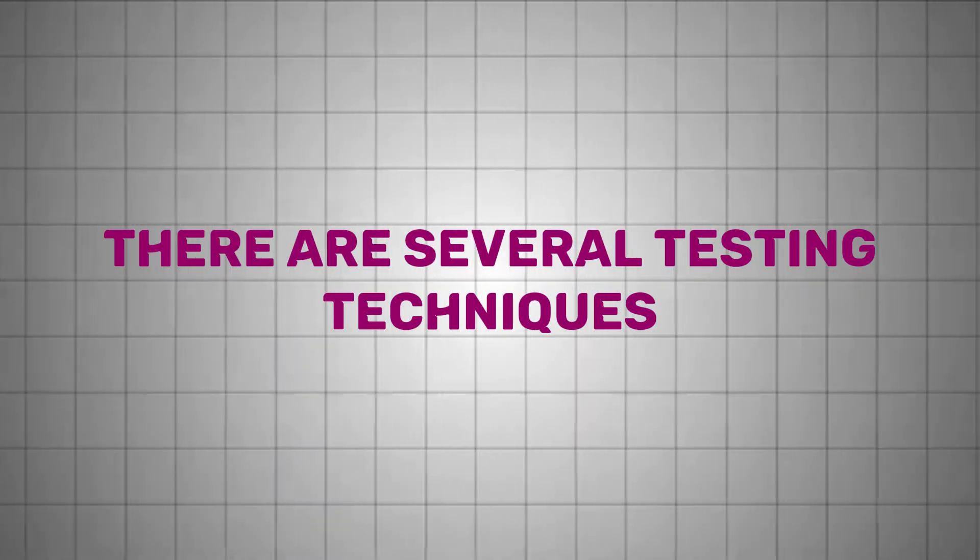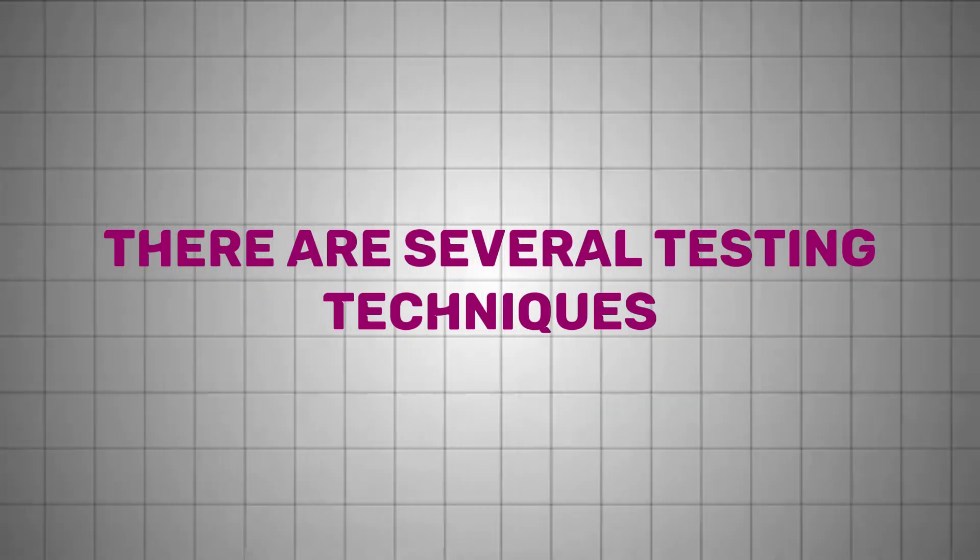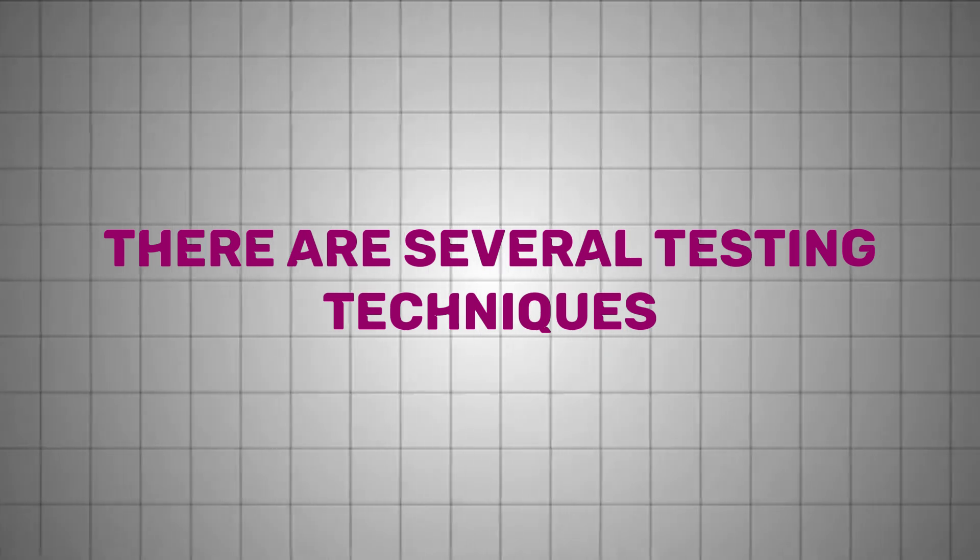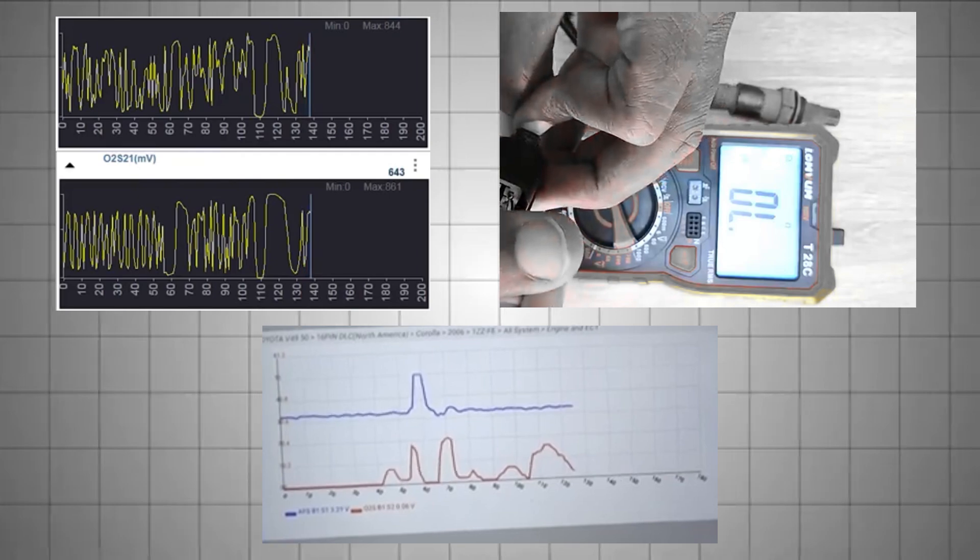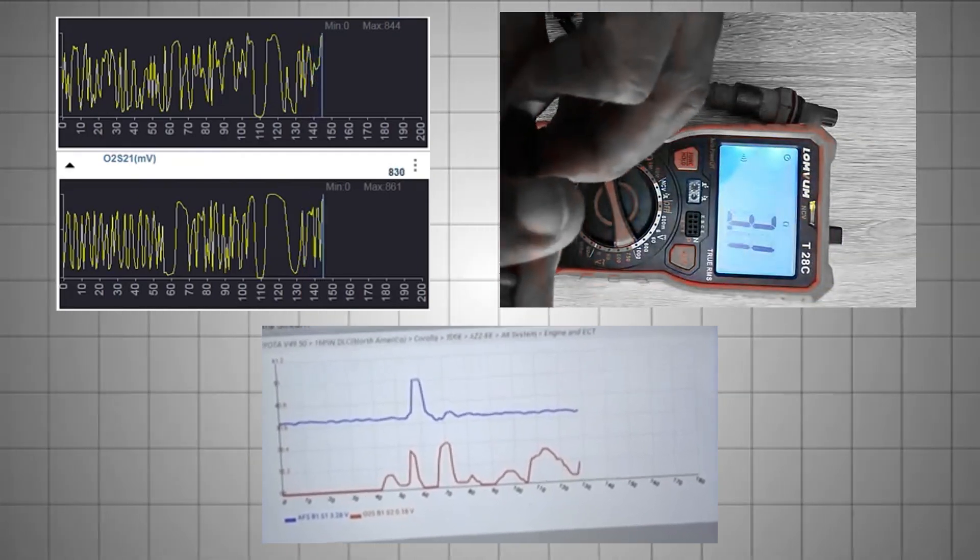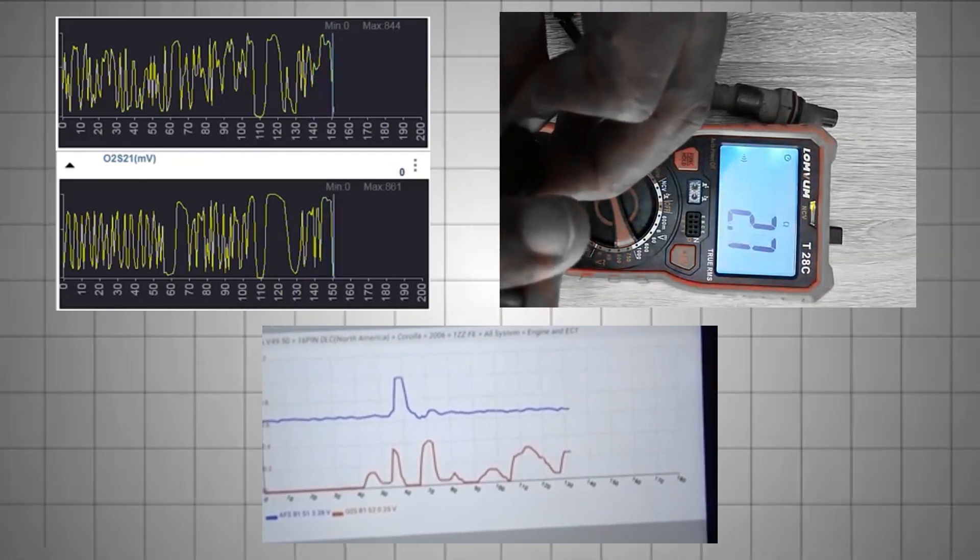There are several testing techniques that technicians rely on to determine whether a sensor is healthy or starting to fail. Each test reveals different weaknesses in an oxygen sensor system, and understanding how to interpret them is crucial to accurate diagnosis.